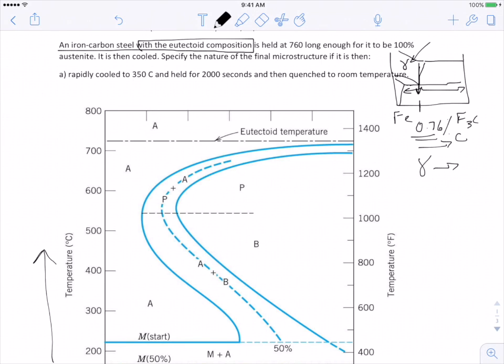The eutectoid reaction refers to austenite going to make ferrite. Excuse me, I'm going to rewrite that. Ferrite is given the symbol alpha plus Fe3C. So that is the eutectoid reaction. That's all stuff you kind of need to know already from the previous chapter, but I'm just putting it back in your head.